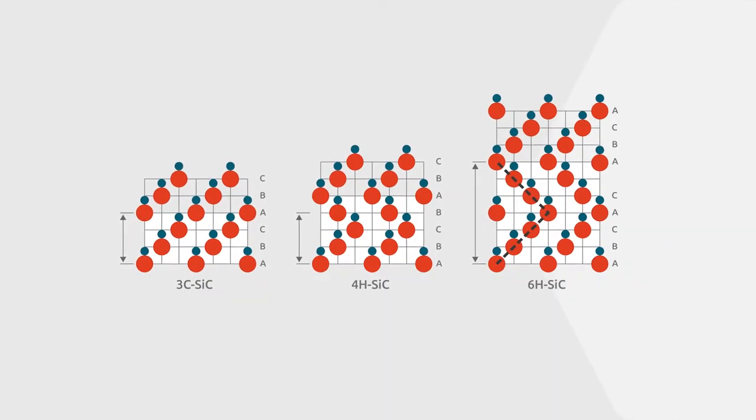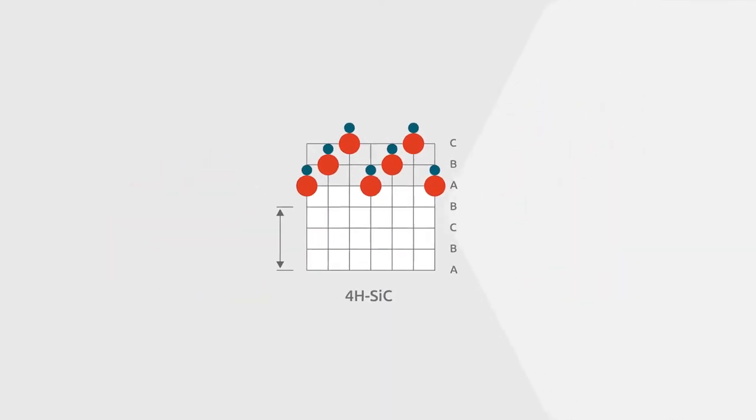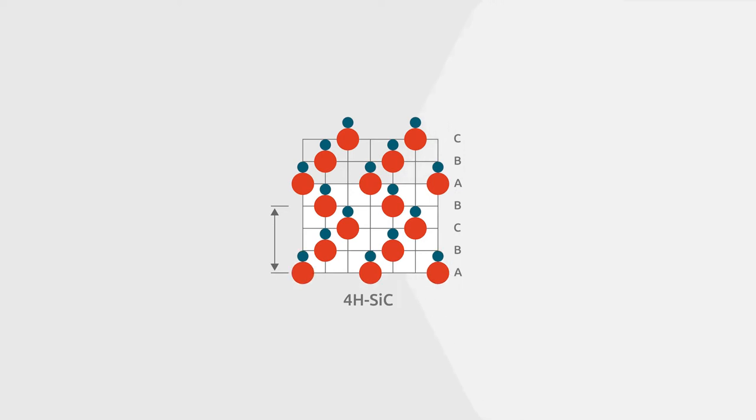Silicon carbide is a wide bandgap semiconductor that consists of both silicon and carbon atoms. It exists in different crystal structures called polytypes. The 4-H polytype is the one that is used in power semiconductors.